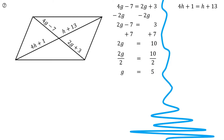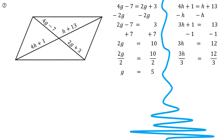4h plus 1 has to be equal to h plus 13 — again, the diagonals bisect each other. Subtract h from each side. I now have 3h plus 1 is 13. Subtract 1 from each side. 3h is now equal to 12. I just want one h, so I divide by 3. 12 divided by 3 comes out to be 4. I bet if you watch this again tomorrow, it'll still be 4.